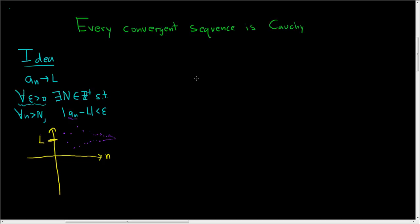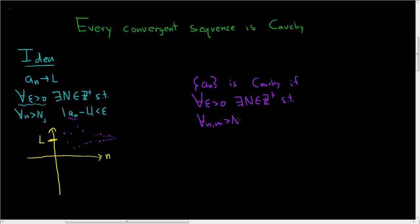So what does it mean for a sequence to be Cauchy? A sequence a_n is Cauchy if — and the definition is very similar — it starts off with: for all epsilon greater than 0, we can find some positive integer capital N, such that for all little n and little m bigger than capital N, the distance between the terms a_n and a_m is smaller than epsilon. In other words, the terms can be made arbitrarily close together. So if you look at the picture, as the dots get closer and closer to L, at the same time they get closer and closer to each other.